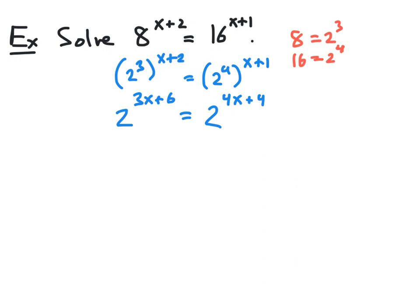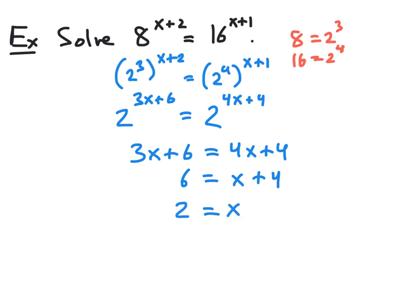Now we are in the same situation as in the previous example. We have 2 to a power equaling 2 to a power with the same base 2 on each side, so we can simply set our exponents equal to each other. We have 3x plus 6 equals 4x plus 4. We subtract 3x from both sides to get 6 equals x plus 4, and then subtract 4 to get x equals 2. So x equals 2 is our solution to 8 raised to the x plus 2 equals 16 to the x plus 1.